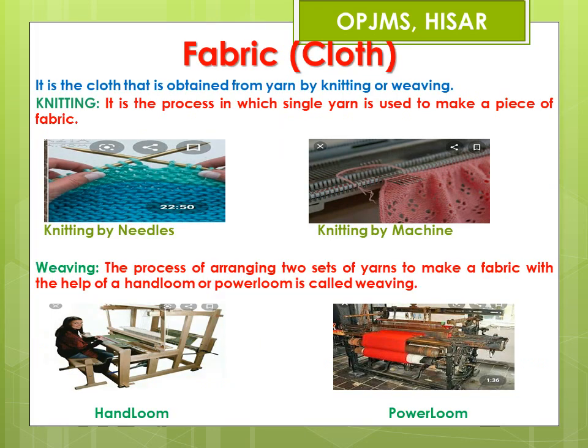So far we have read about yarn. This yarn is now used to make fabric. Fabric can be made from yarn by two methods: knitting or weaving. You must have noticed your mother or grandmother knitting sweaters at home. The process of making a piece of fabric from a single yarn is known as knitting. Knitting can be done either by hand or by machines. Since knitting is done from a single yarn, if we pull a yarn from a sweater, the whole sweater gets unraveled. Socks, sweaters and many other clothing items are made by knitting yarns. Knitted fabrics are quite stretchy.